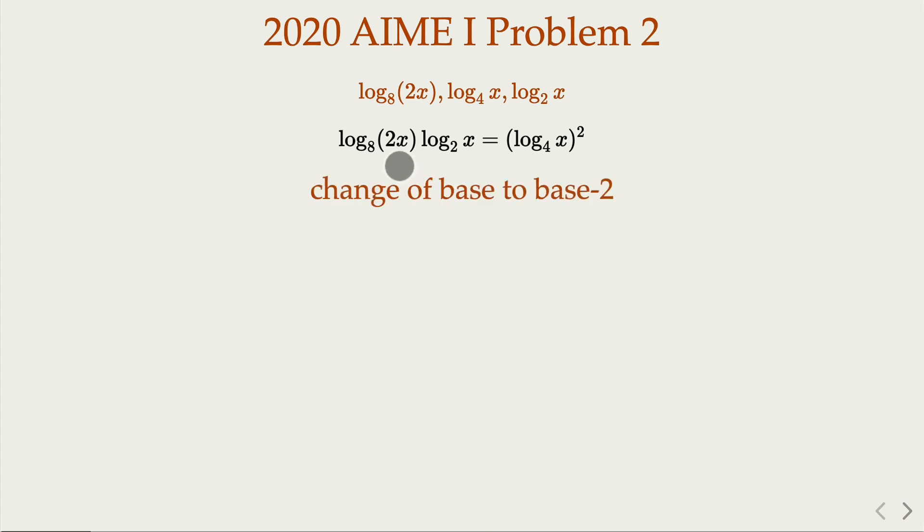On the left hand side, it becomes the product of two fractions here. And notice that log 2x, you don't have to change because it's already in base 2. But for 4 and 8, we don't like that. So we're going to change it. Of course, this is the square.